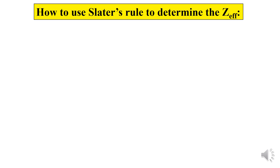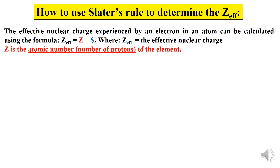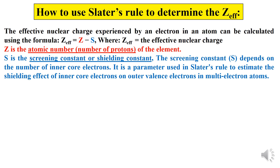To determine the Z-effective using Slater's rule, you can use the formula: Z-effective equals Z minus S. Here, Z-effective is the abbreviation for effective nuclear charge, Z is the atomic number — the number of protons for the particular element — and S is the screening constant or shielding constant. The screening constant depends on the number of inner core electrons and is a parameter used in Slater's rule to estimate the shielding effect of inner core electrons on outer valence electrons in multi-electron atoms.